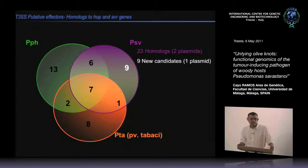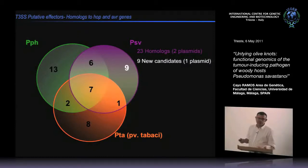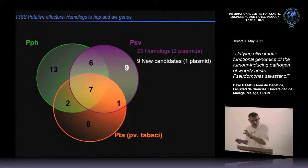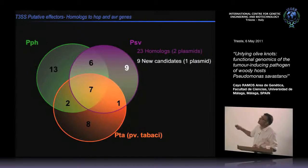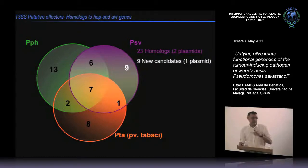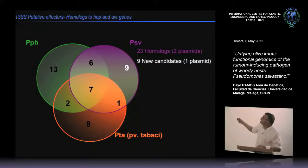We also looked for proteins potentially secreted through the type 3 secretion system, using a bioinformatics strategy—not only looking for homologues but also designing programs to identify the N-terminal signal essential for translocation. We finished with a collection of 23 homologues, two of them plasmid-encoded and nine new candidates, one in a plasmid not shared with any other sequenced strain. We know the two plasmid-encoded proteins are translocated and are real protein effectors.